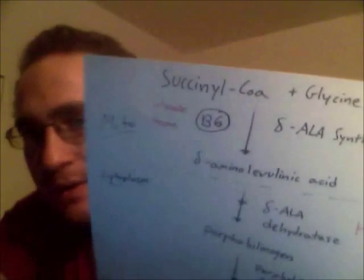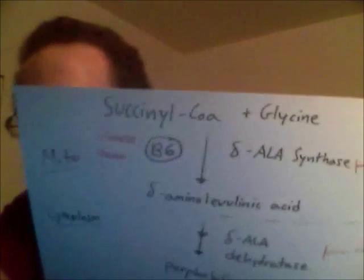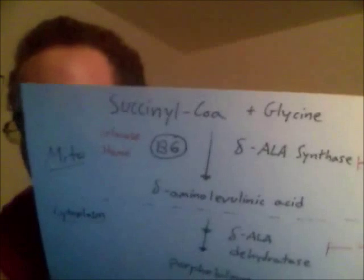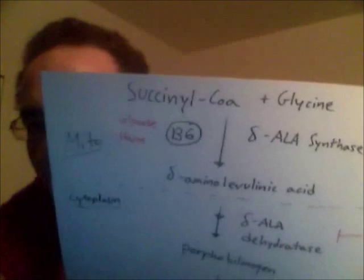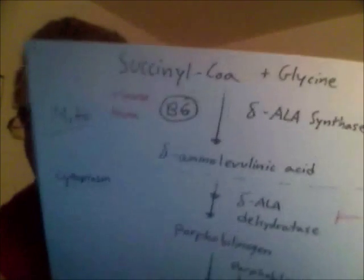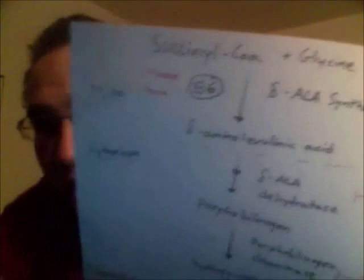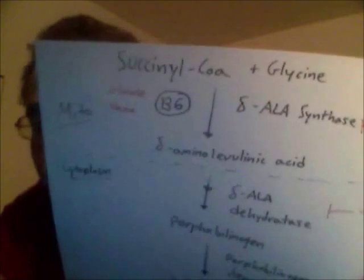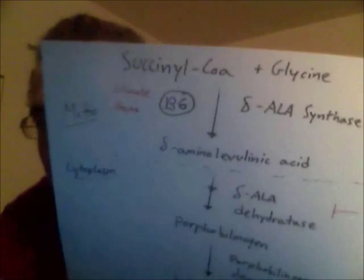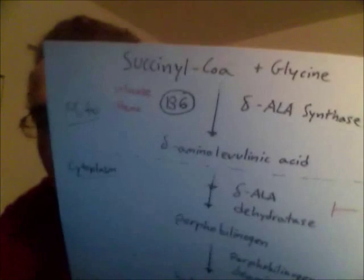He's at home in the mitochondria at first, and he decides he wants to leave home, wants to explore the world a bit, go to college. So he grabs his glycine and forms delta-aminolevulinic acid. The easy way to remember this is that it's got amino acid in its name, so you have to remember that to make it you needed an amino acid, in this case glycine. And 'levulinic' — he's leaving the mitochondria — so delta-aminolevulinic acid.